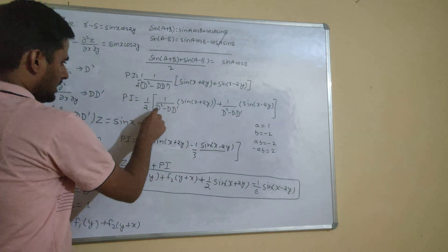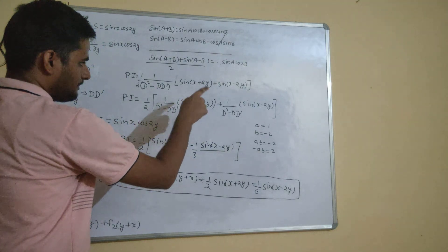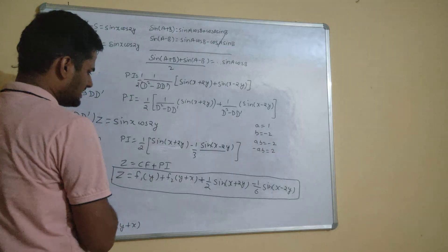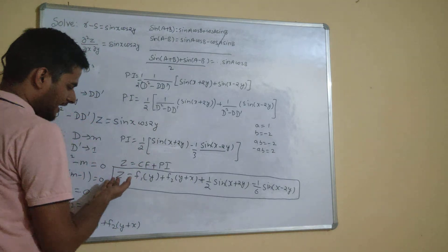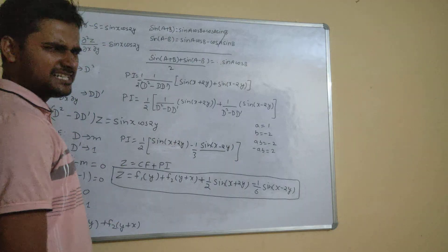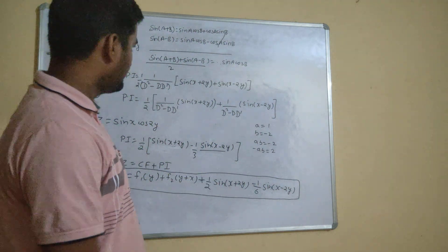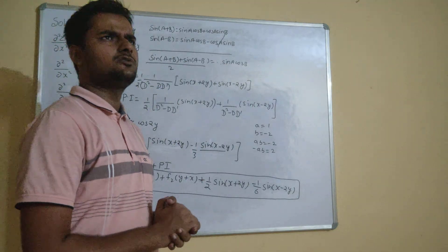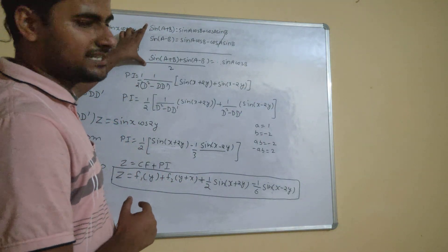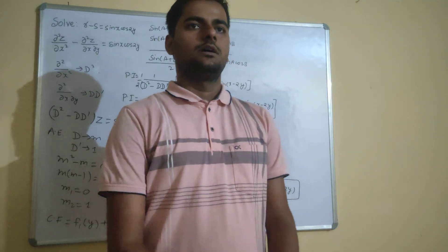For the particular integral with sine or cosine, sin a cos b can be written as [sin(a+b) + sin(a-b)]/2. Separate into two terms, then apply: D² → -a², D·D̄ → -ab, D̄² → -b². If the denominator is not zero, write the result directly. You can easily solve this type of question in a couple of minutes without needing to memorize formulas. Do watch the PDE playlist for more such problems.